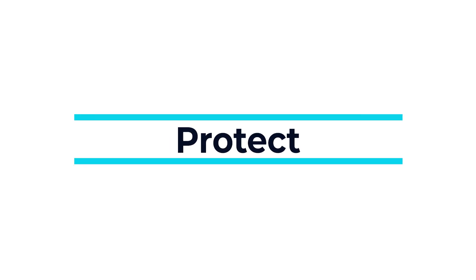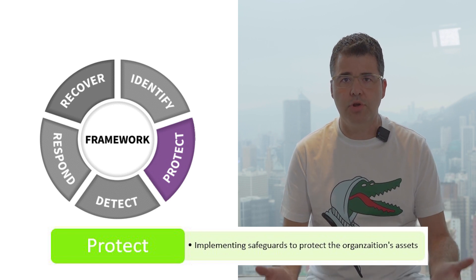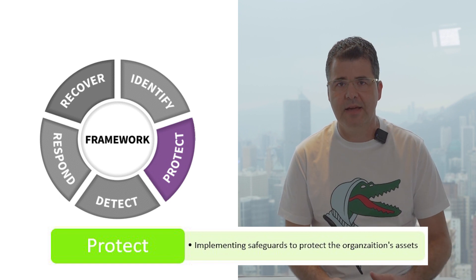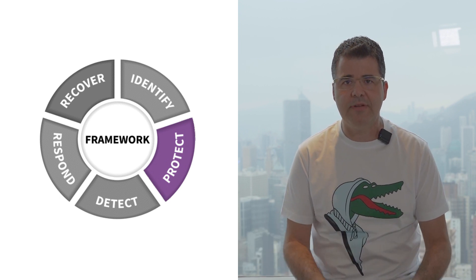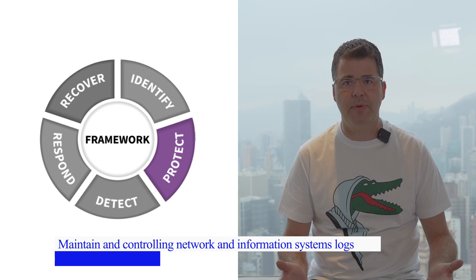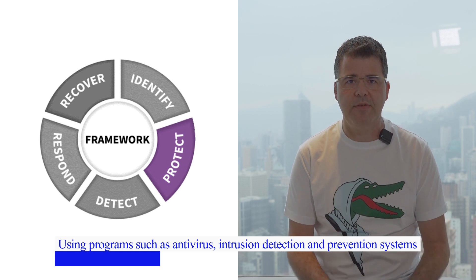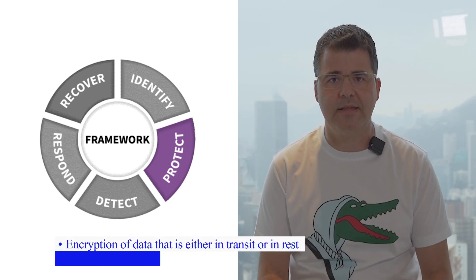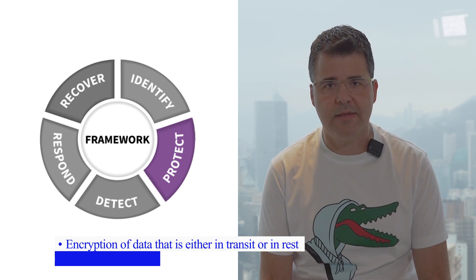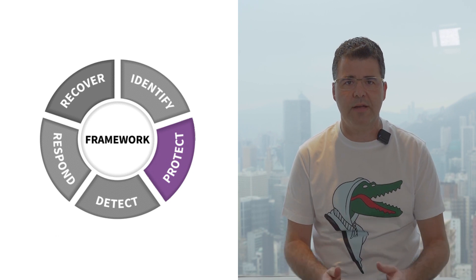The second function is Protect. The Protect function of the NIST Framework defines the security controls that are necessary to protect key assets in order to ensure the delivery of critical services in case of a cybersecurity breach. Activities included in this function are: maintaining and controlling network and information system logs; using programs such as antivirus, intrusion detection, and prevention systems to protect the network and sensitive data from intrusions; encryption of data that is either in transit or at rest; and updating key assets such as software, PCs, and programs with regulatory updates.